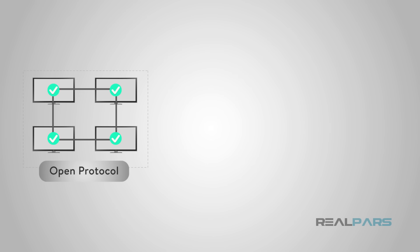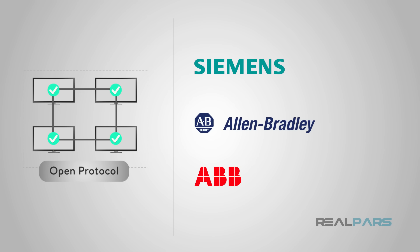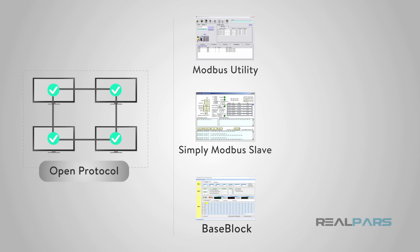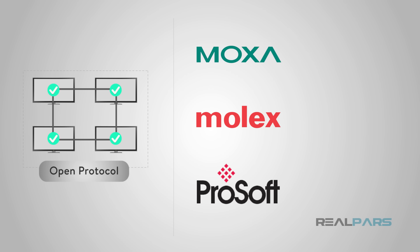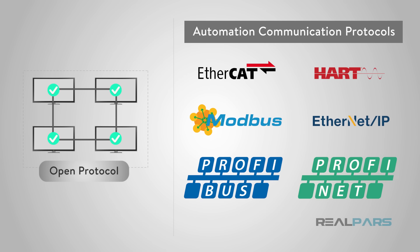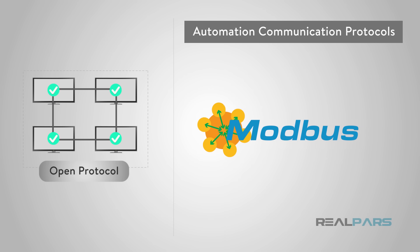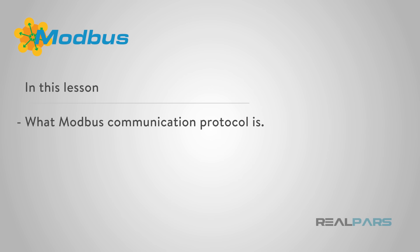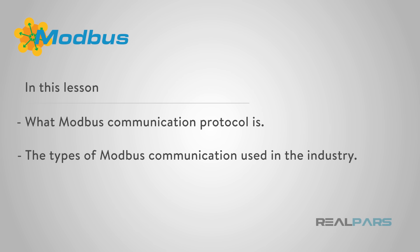Advantages of open protocols include support by multiple manufacturers, software vendors, and install service organizations, active community groups for support, the ability to stay current, and add capabilities in the future. One of the most common automation communication protocols for connecting industrial electronic devices used today is Modbus. In this lesson, we will discuss what Modbus communication protocol is and the types of Modbus communication used in the industry.